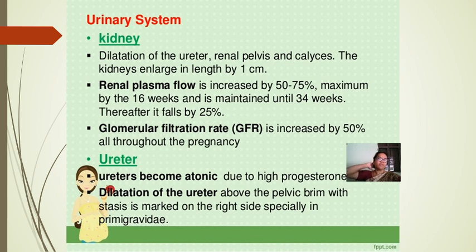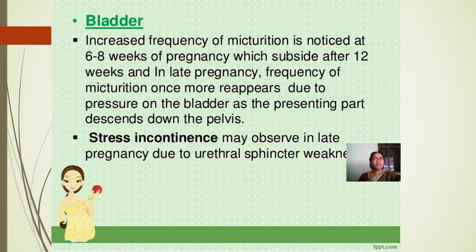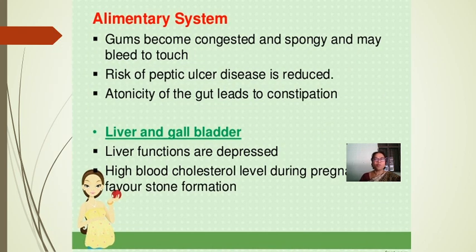Urinary system: dilation of the ureter, renal pelvis, and calyces may occur. The kidneys enlarge by 1 cm in length. Renal plasma flow increases by 50–75%, maximum by 16 weeks, maintained until 34 weeks then falls by 20%. Glomerular filtration rate increases by 50% throughout pregnancy. The ureter becomes atonic due to high progesterone levels, with dilation above the pelvic brim and stasis more marked on the right side, especially in primigravida. Increased frequency of urination is noticed at 6–8 weeks, subsides after 12 weeks, then reappears in late pregnancy due to pressure from the presenting part. Stress incontinence may occur due to urethral sphincter weakness.